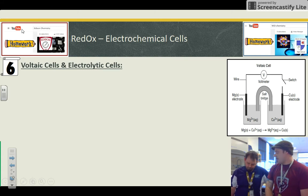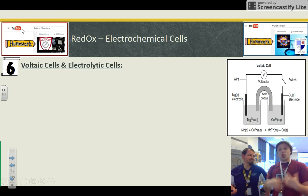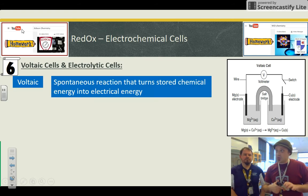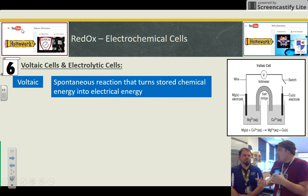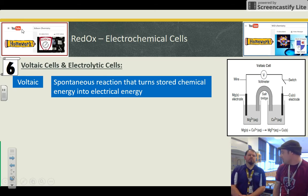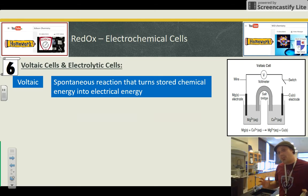Oxidation numbers, half reactions, reactivity cell series. Spontaneous, non-spontaneous. So a battery is a spontaneous chemical reaction that occurs to create electricity. And we call them batteries, voltaic piles. All these things are spontaneous reactions that can turn stored up chemical energy into electrical energy.